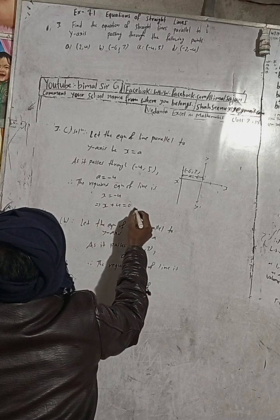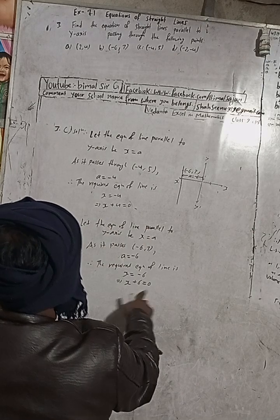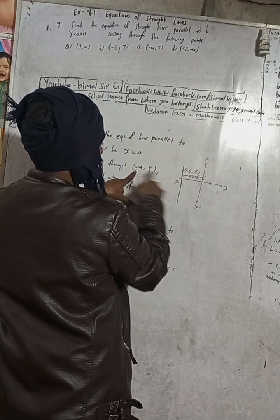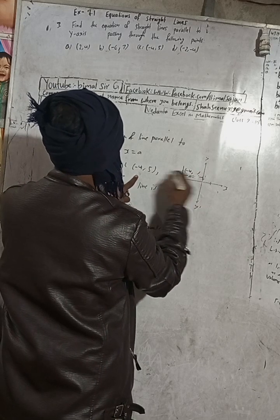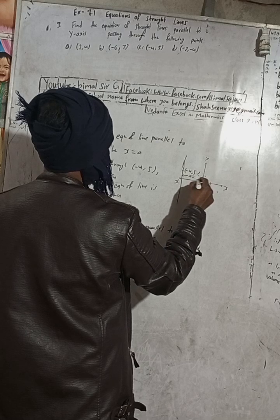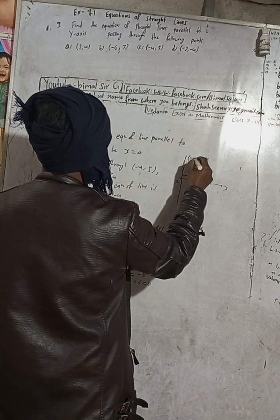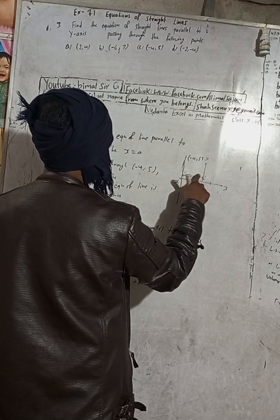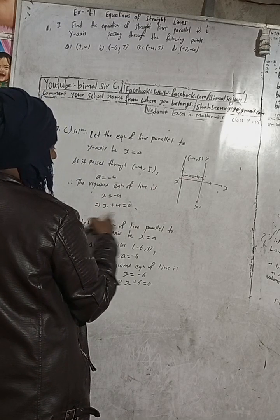Therefore the required equation of the line is x = a, and since a = -4, we get x = -4, which means x + 4 = 0. The answer in the book is x + 4 = 0 — correct. For the figure: x = -4 means the line is on the left side. Plot (-4, 5): four units left and five units up. The distance 'a' equals -4, so the equation is x + 4 = 0.